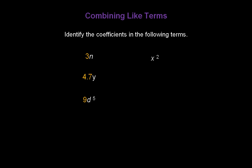x to the second power — remember, if you don't see a number in front of a variable, it's always going to be a 1, so the coefficient of this term is 1. 2/5 k — the number in front of k happens to be a fraction, but that's a number, so the coefficient for this term is 2/5.